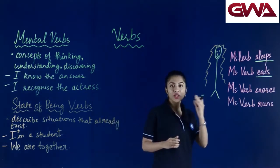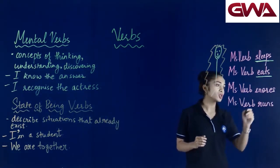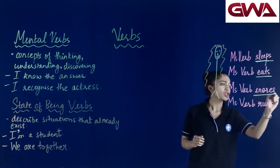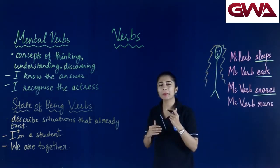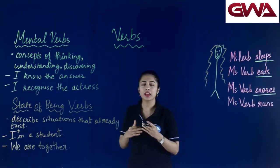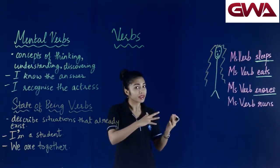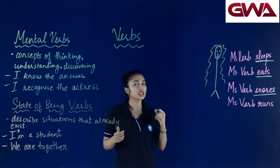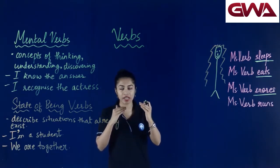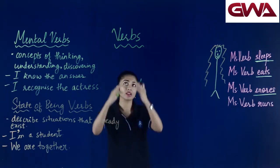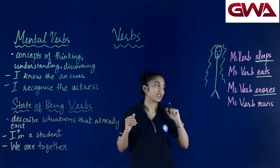Let's take a look at the third sentence. Miss Verb snores. Snoring is a bad habit, but Miss Verb does it. So this is the action — again, it is a verb, it denotes action.